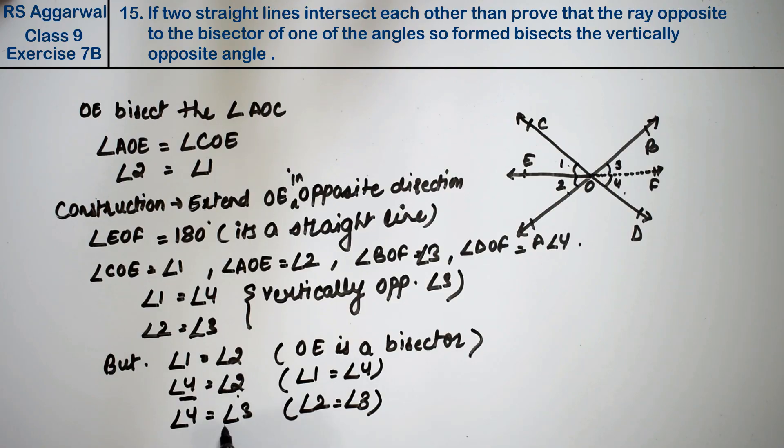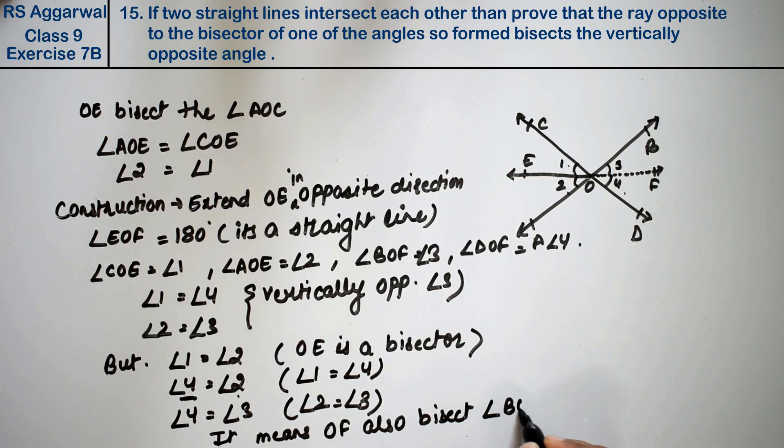So angles 3 and 4 are also equal. When 3 and 4 are also equal, that means it means OF also bisects angle BOD. Hence proved.